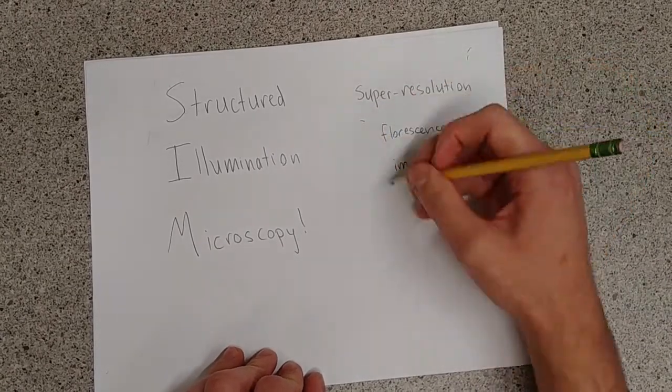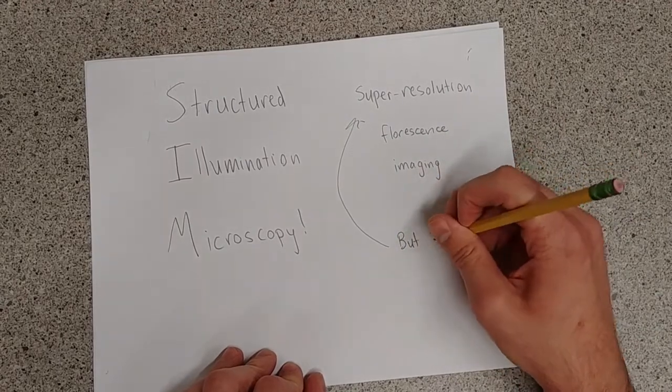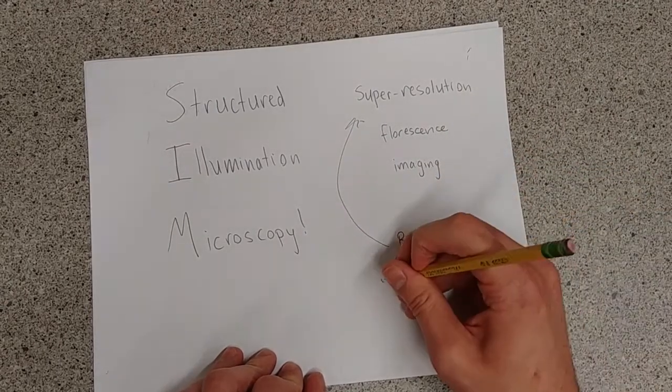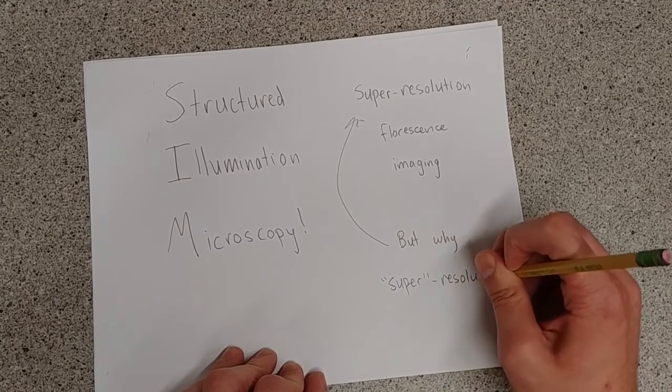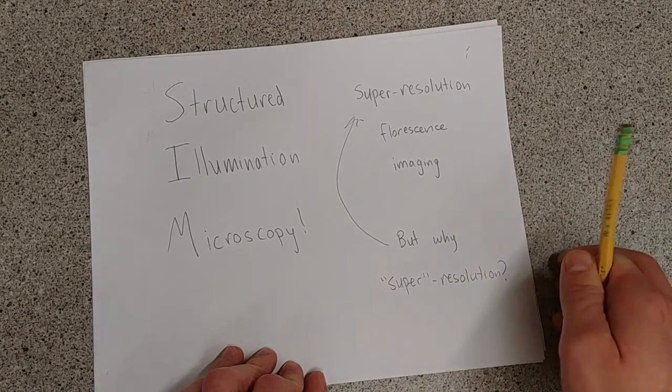And you may ask yourself, well, we already have techniques for fluorescent imaging. Why do we need this for super-resolution? Well, a lot of those traditional methods have fundamental flaws that keep us from imaging very small objects.